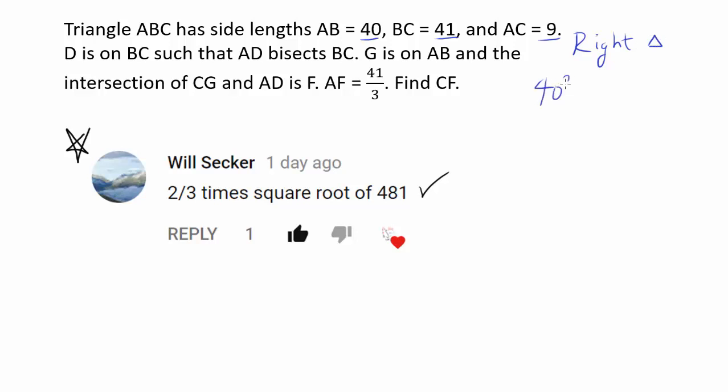So this is a right triangle. 40 squared plus 9 squared gets you 41 squared. You guys can check it out if you want to. So we have a triangle that looks something like this. We have a right triangle with legs of 9 and 40 and a hypotenuse of 41.